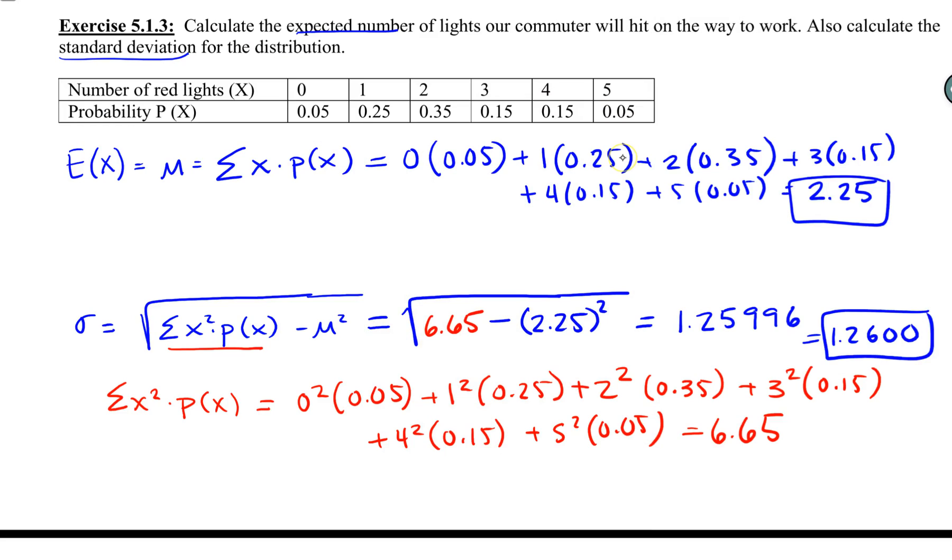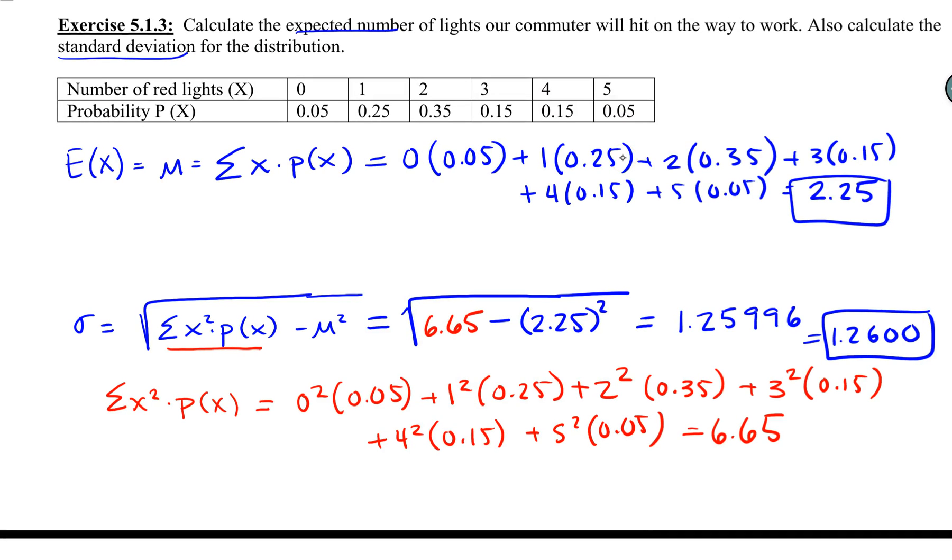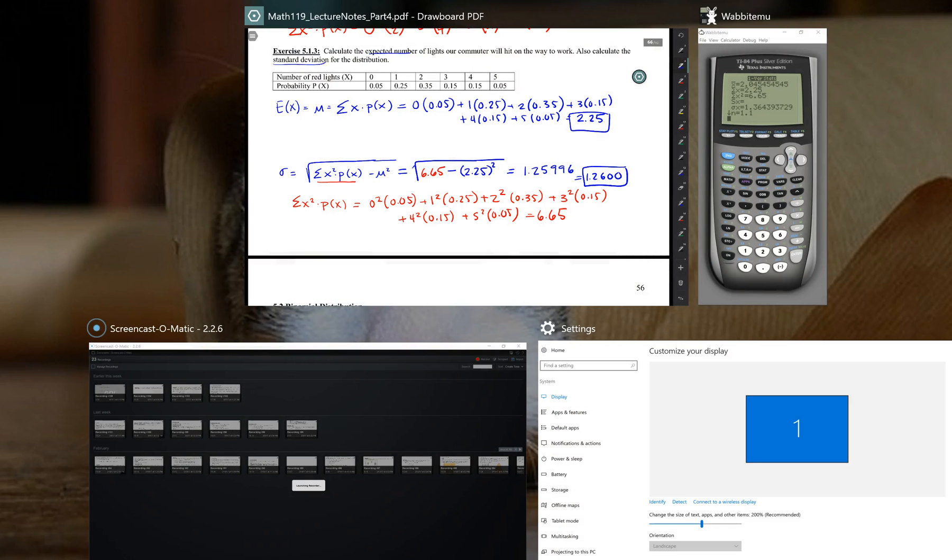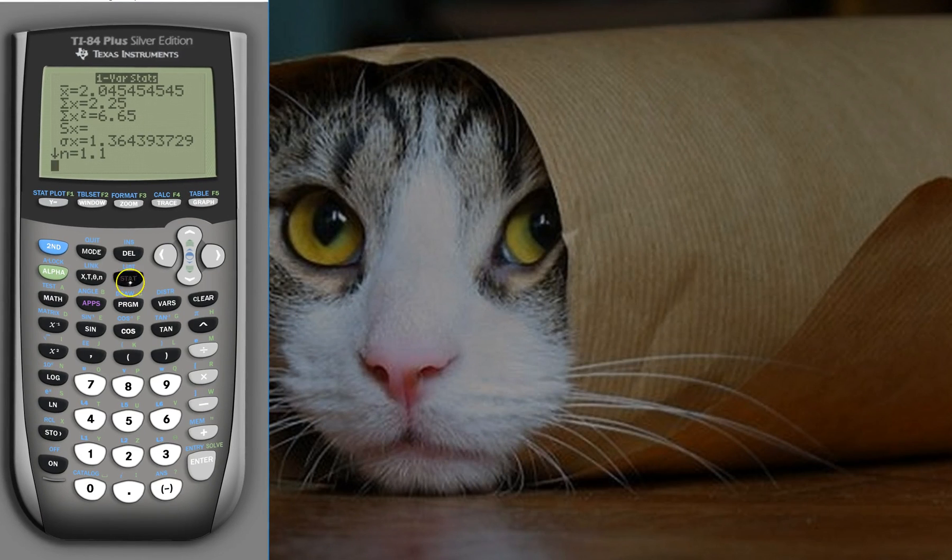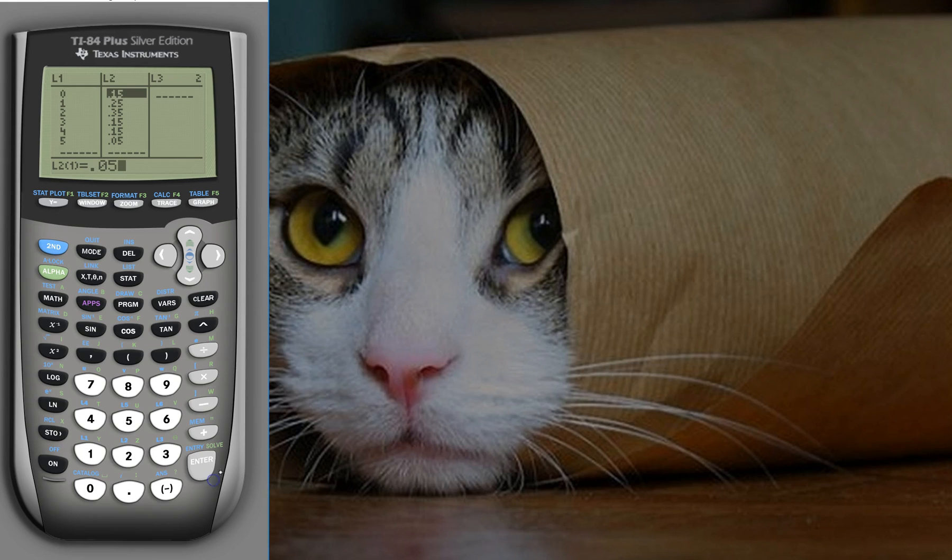The first value should have been 0.05. I put it as 0.15, so I need to fix that. In the calculator, I'll go back, edit my list, and change it to 0.05. This is why you can use n as a check. I'm going to leave this error in the video because it's a valuable lesson.